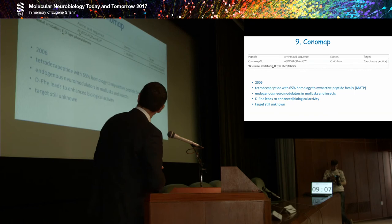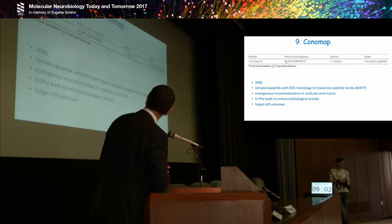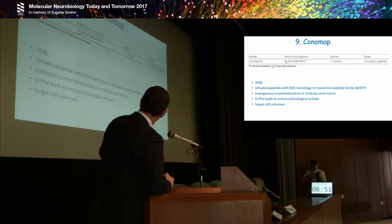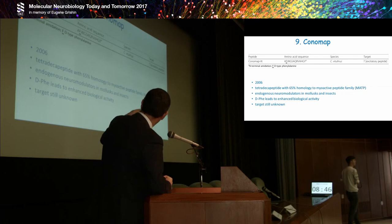Then the conomap. Again, one member only, completely disulfide-free. We know it since 2006. Tetradecapeptide with 65% homology to the myoactive peptide family, the so-called MATPs. We believe it's an endogenous neuromodulator in molluscs and insects. The D-phenylalanine leads to enhanced biological activity, but the target is still unknown.